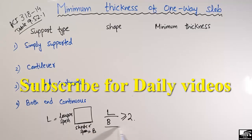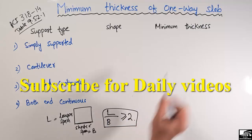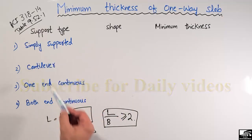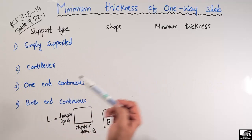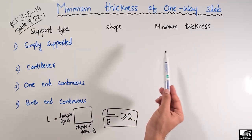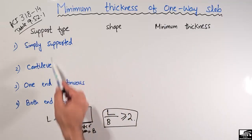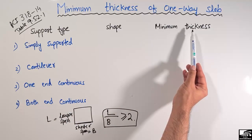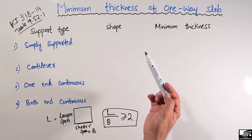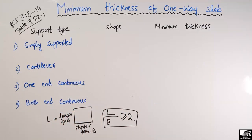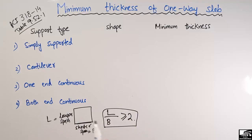ACI provides different types of support and the different minimum thicknesses that should be kept for each type of one-way slab. We provide the minimum thickness in order to control deflection for each type of slab. After determining that we have a one-way slab, we should look into the type of support condition.